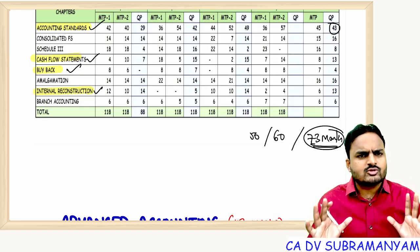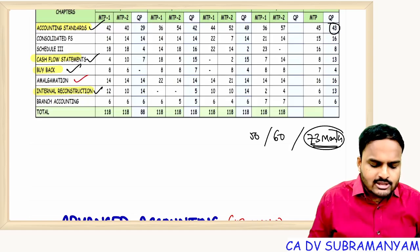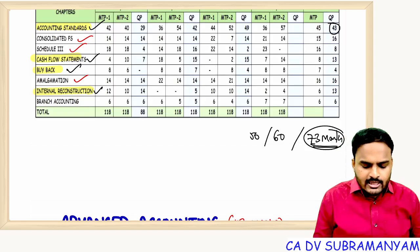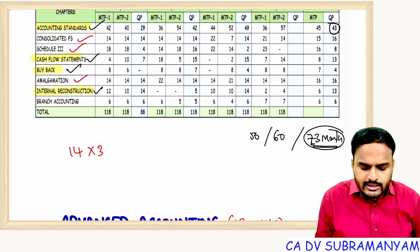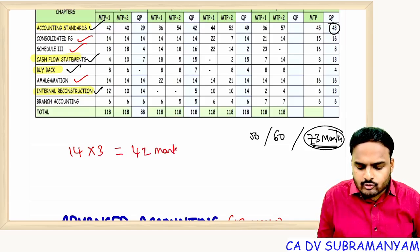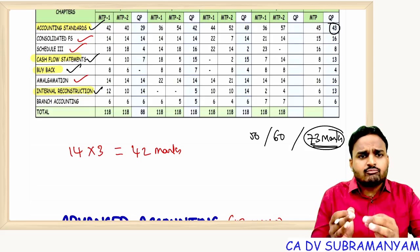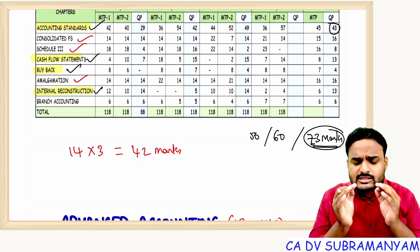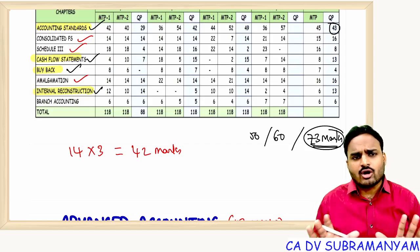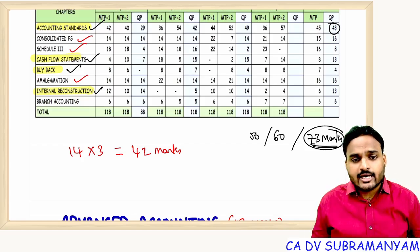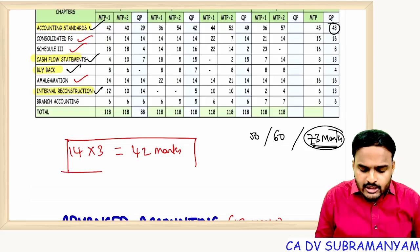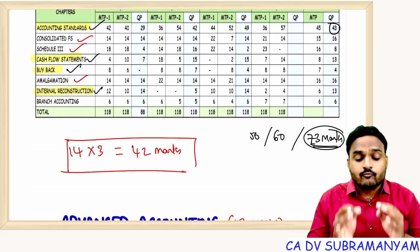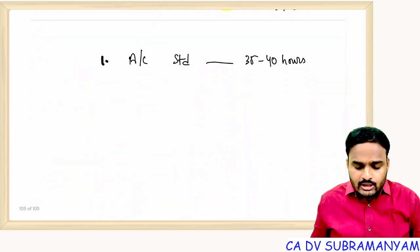The majority of students first prepare amalgamation, consolidated financial statements, and Schedule 3. From these three chapters, imagine maximum 42 marks are coming. But just look at the previous question papers — each question may be 4 to 5 pages with adjustments, and if you miss one adjustment, the entire problem can go wrong.